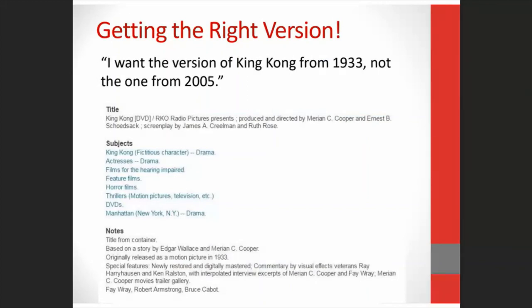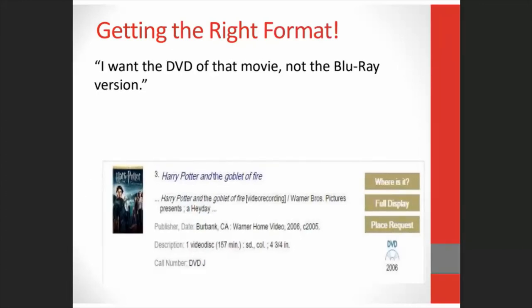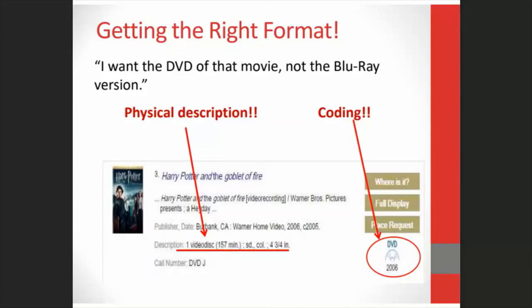We also want to make sure we get the right disc format — I want the DVD of that movie, not the Blu-ray version. Having accurate physical description is important to the patron to get them the right format they need. We have a brief physical description which tells us that we have a disc of some type, and we also have a little icon that tells the kind of disc. This type of icon comes from the coding in the catalog record and can be very useful for easy identification of formats. Each library system has different kinds of icons with varying amounts of information, so not all library displays will have this detailed of an icon.